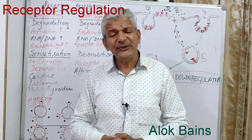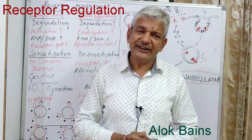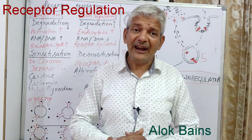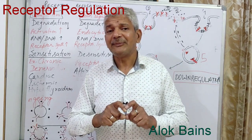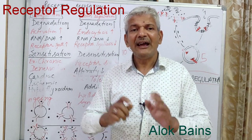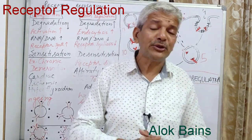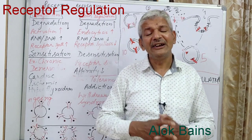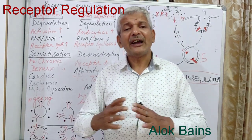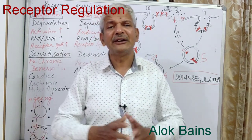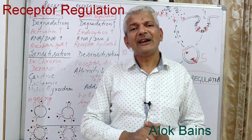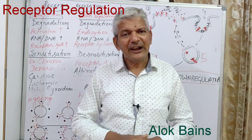Another example is caffeine. Caffeine combines with adenosine receptors to produce its effect. With chronic caffeine use, down-regulation reduces the number of adenosine receptors. If we suddenly stop caffeine, the body's adenosine cannot combine with sufficient receptors, the body does not feel normal, and withdrawal syndrome begins — the person craves caffeine to feel normal again. There are many other examples, but due to limited time, I am stopping here. I hope this explanation has clarified what receptor regulation is. Thank you very much for viewing this video.